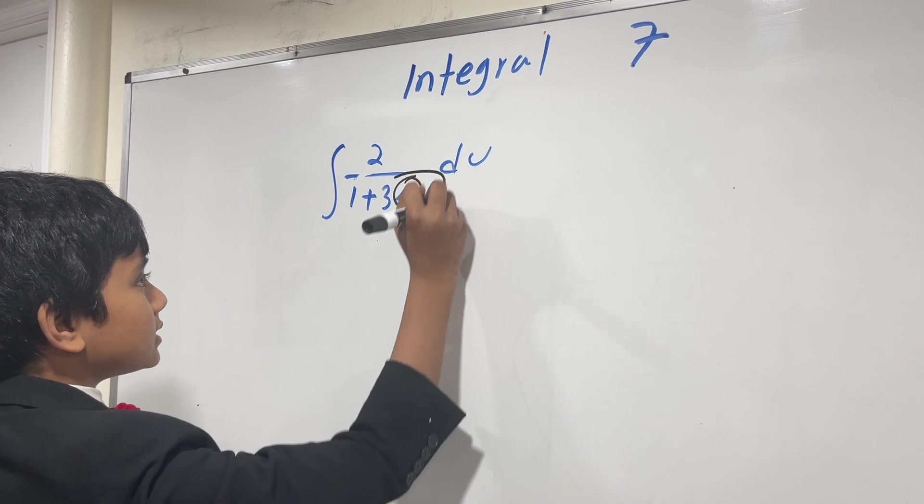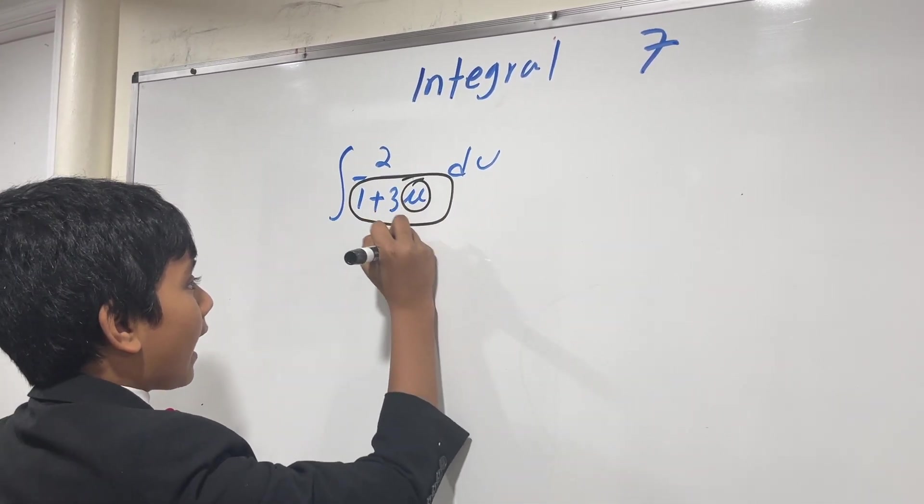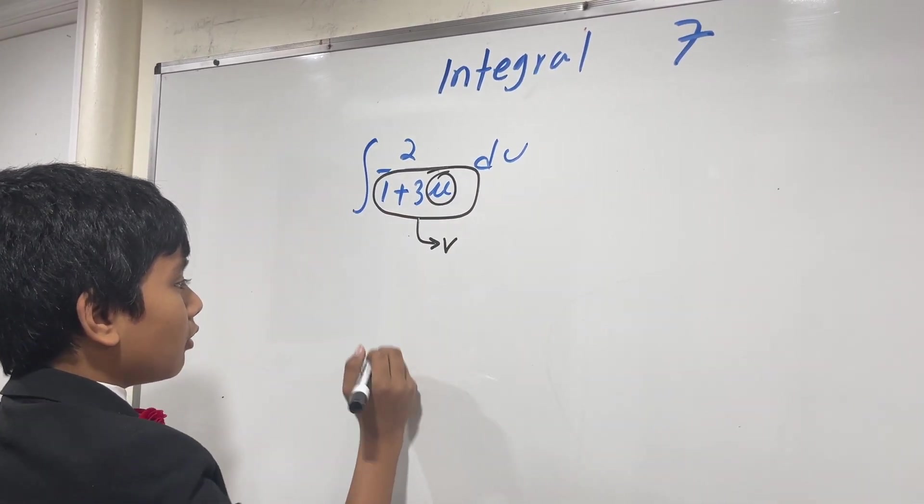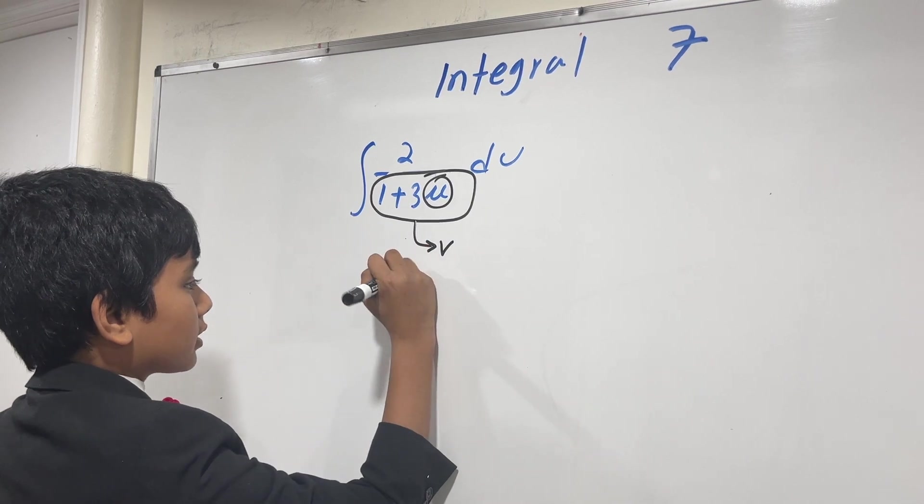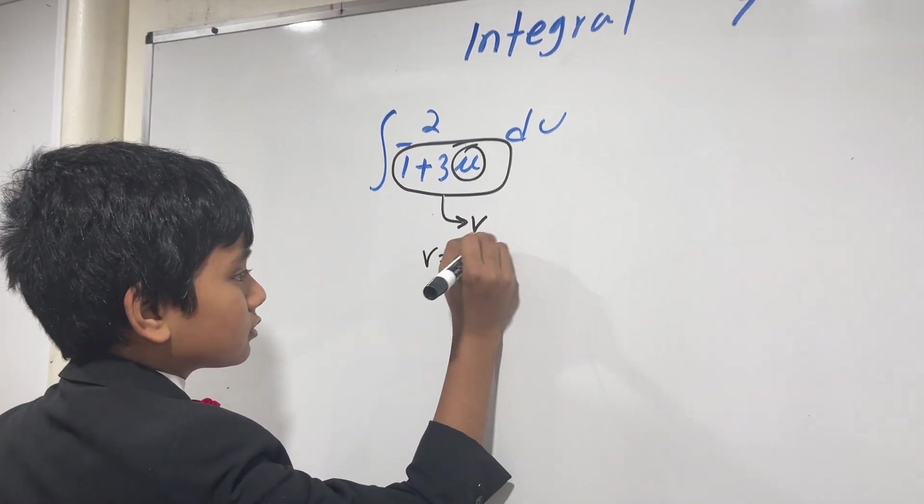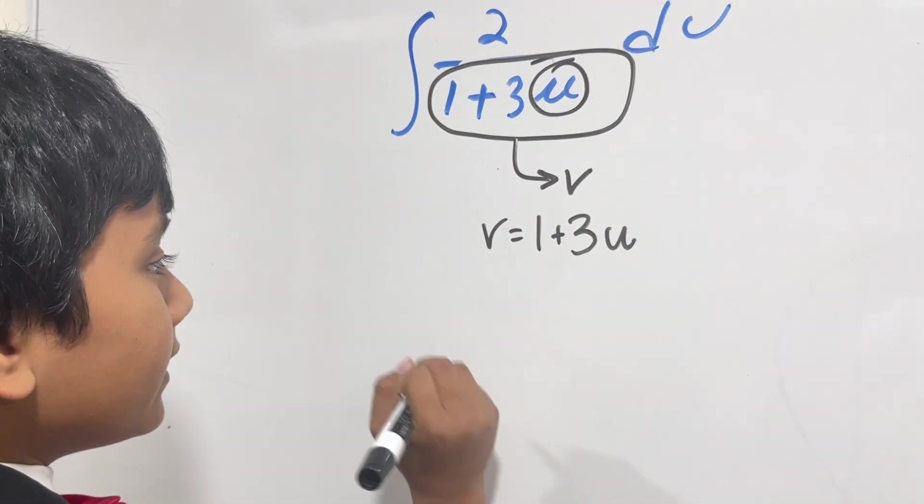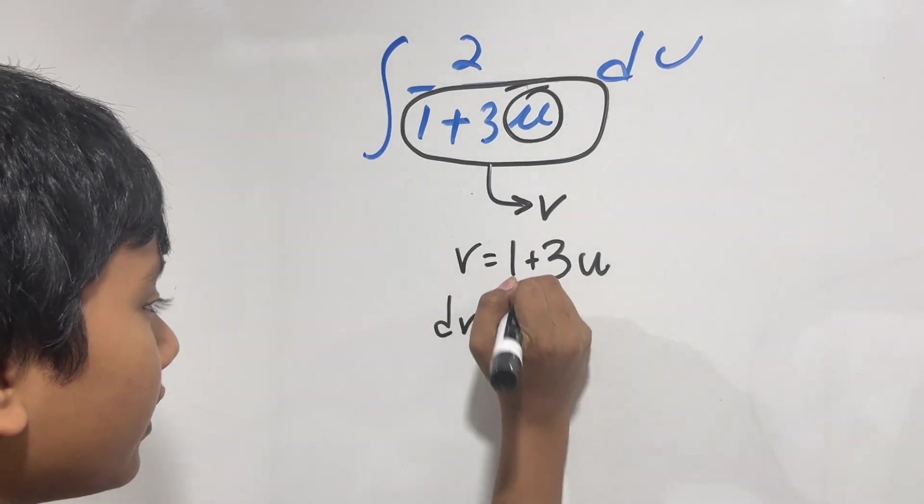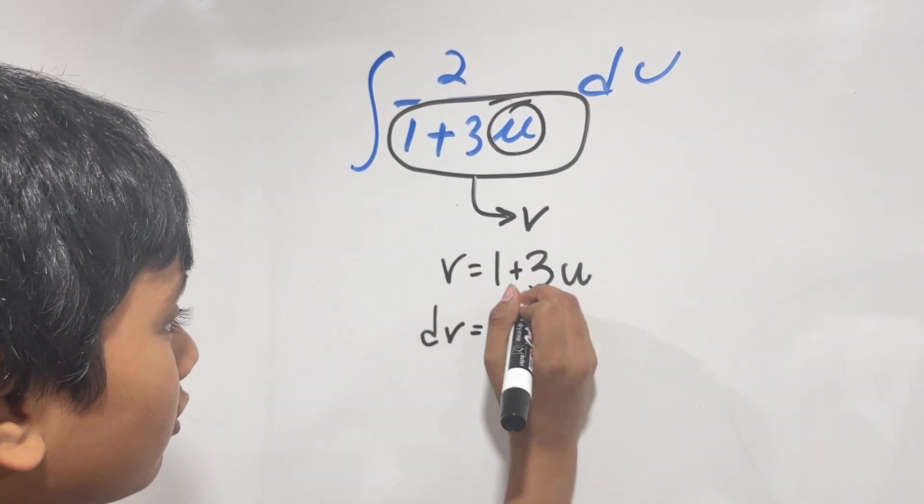This is going to be our v, and what we're going to do is take v, which is 1 plus 3u, and then of course we take the derivative, so dv is equal to